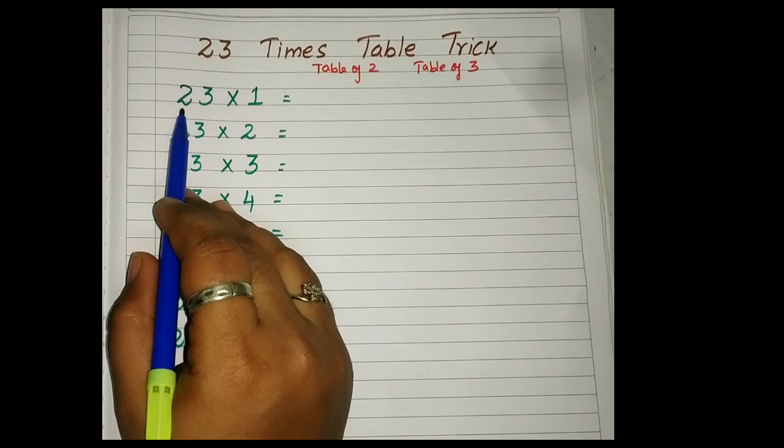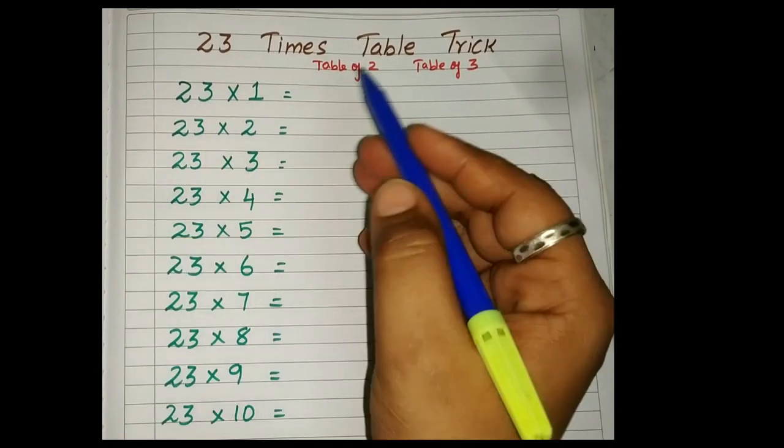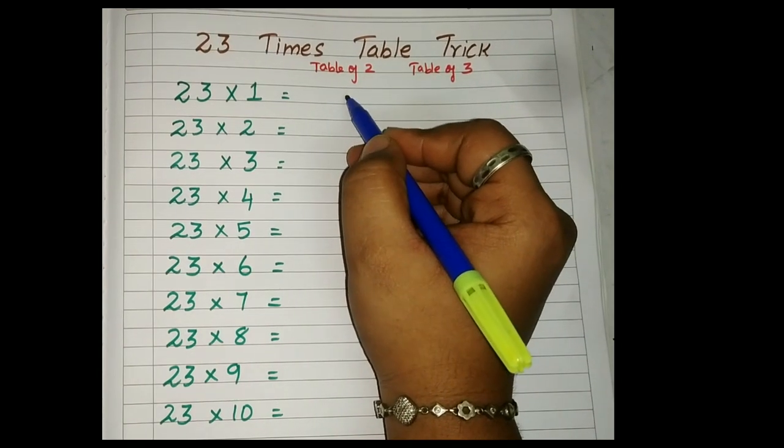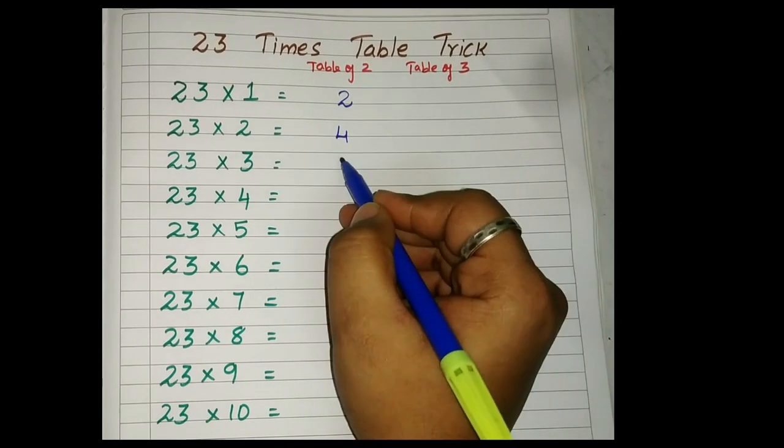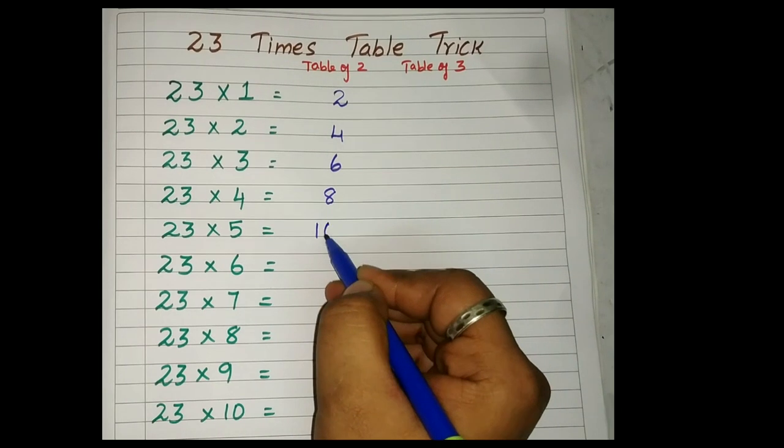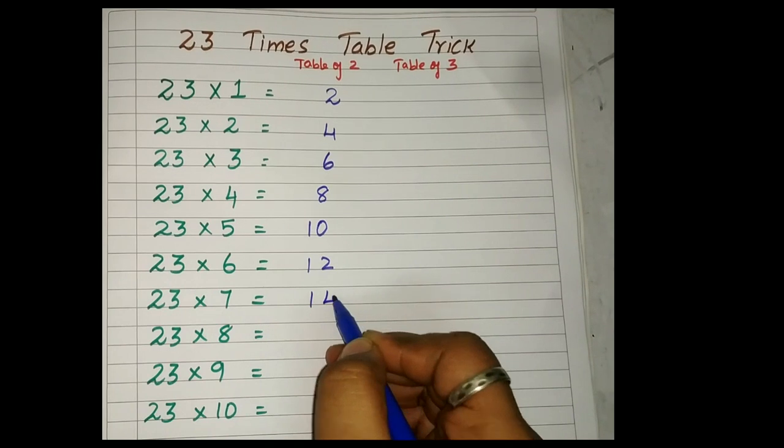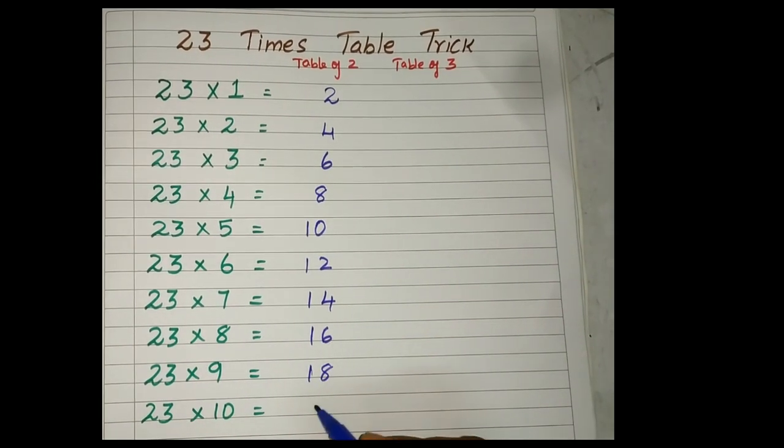23 is given separately. You should write the two tables and separately you should write the three tables product. So here I'll be writing the two tables product: 2 ones are 2, 2 twos are 4, 2 threes are 6, 2 fours are 8, 2 fives are 10, 2 sixes are 12, 2 sevens are 14, 2 eights are 16.